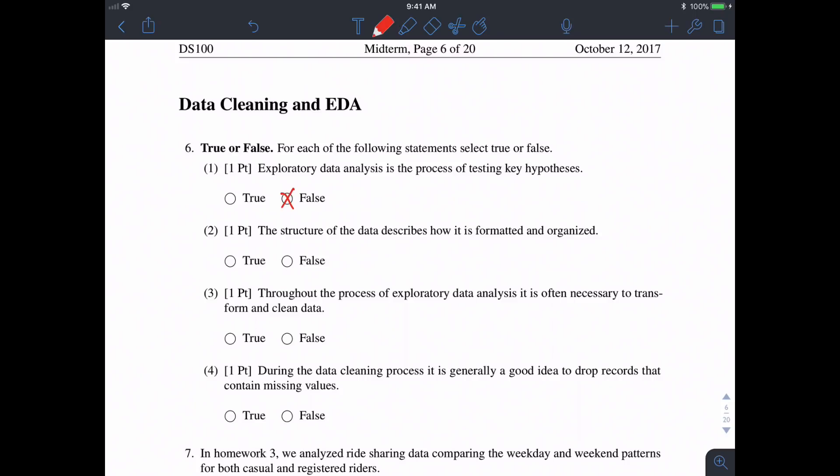Part 2: The structure of the data describes how it is formatted and organized. That's exactly right, because if you're given a CSV file, JSON, or XML file, that tells us the relations given in the data—whether we're given all the data for a certain category or certain restaurants, and so forth.